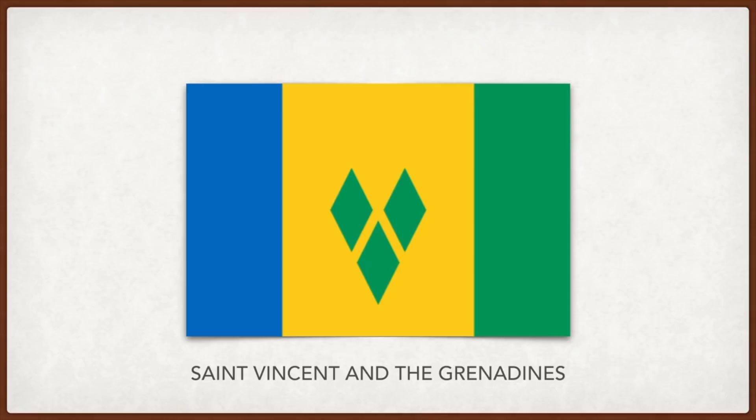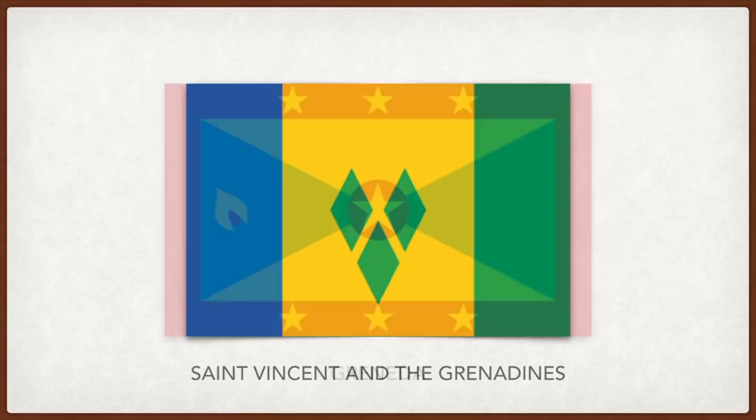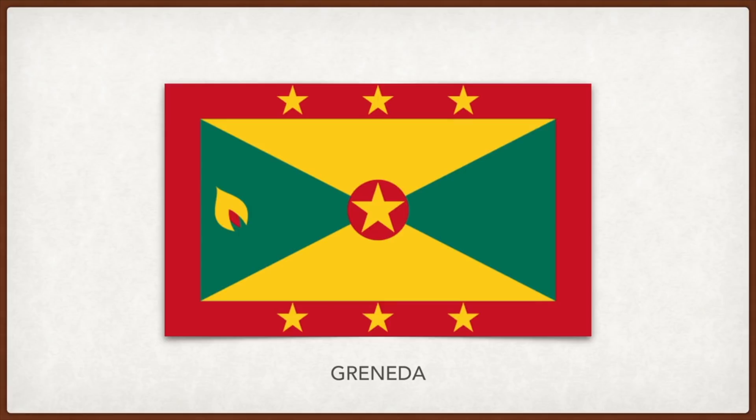Grenada: green is for vegetation, yellow for wisdom and the sun; the red border is symbolic of courage and vitality; the seven yellow stars represent the original subdivisions of the country; and the symbol on the left represents nutmeg, a principal crop of the country. Tonga: the red cross represents Christianity, the white colors for purity, and the red the blood of Christ shed on the cross.